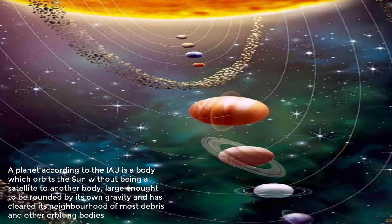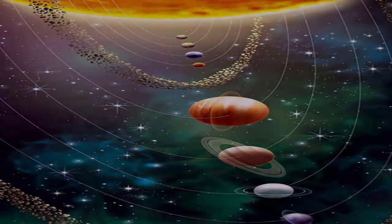A planet, as defined by the International Astronomical Union, is a body which orbits the sun without being a satellite to another body, large enough to be rounded by its own gravity, and has cleared its neighborhood of most debris and other orbiting bodies.